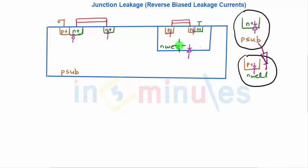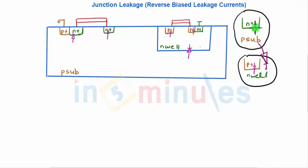For the PMOS, the P-type drain and source meet the N-well connected to VDD. The source would be connected to VDD, but the drain might be connected to the output. I have magnified the two and shown here: in the P-substrate, N-type impurities, and in the N-well, P-type impurities, and I've shown the diode representation.